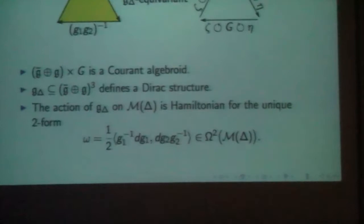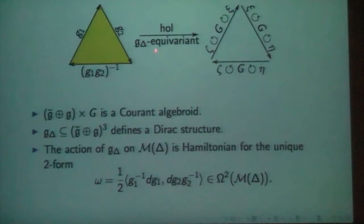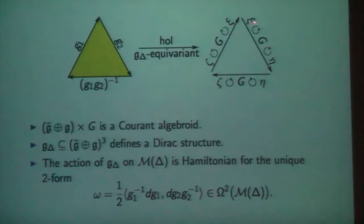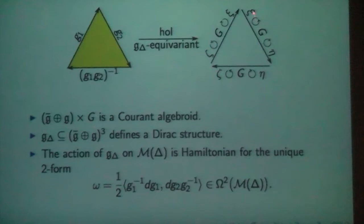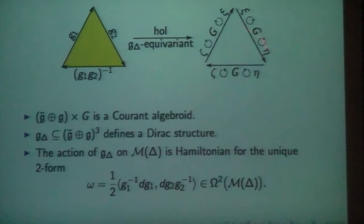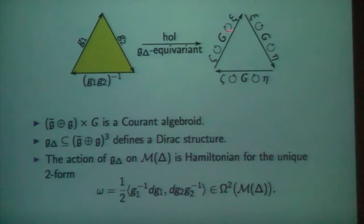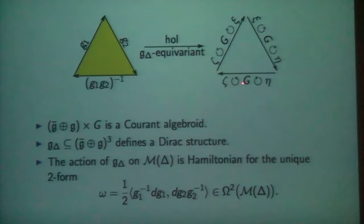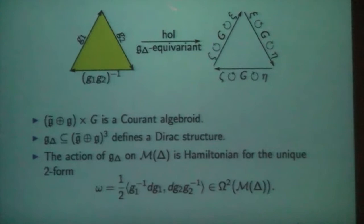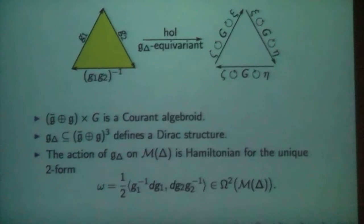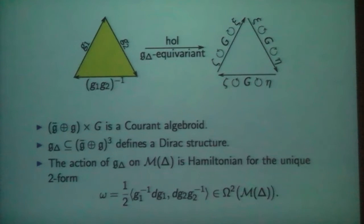The G-delta — the residual gauge algebra for the moduli space of a triangle — is just three copies of the Lie algebra acting diagonally. You can see it as elements zeta, eta, and zeta acting on three copies of the structure group: zeta acts on the right of this structure group, zeta acts on the left of this structure group, and so on. The moduli space of the triangle is embedded as an invariant subset.